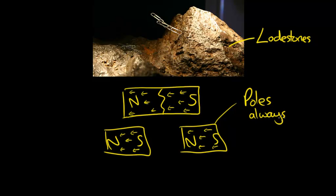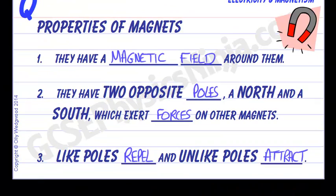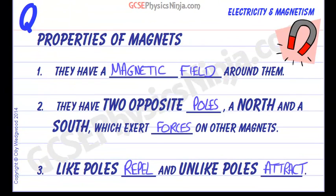So one thing that's important to note is that poles always exist in pairs, what we call dipoles. Poles always exist in pairs. So those are the basic properties of magnets.